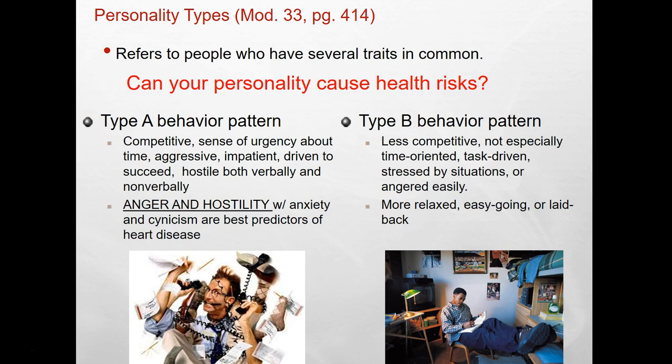The biggest factor contributing to coronary heart disease among Type A people is anger and hostility — those are the two key features that contribute to heart disease. There are some Type A people who don't have a lot of anger and hostility, and their risk for heart disease is really no different than Type B people. Type B people are laid back and easy going and generally have low scores on neuroticism on the Big Five. They don't get too stressed out, take things in stride, and stay pretty calm in tense situations.